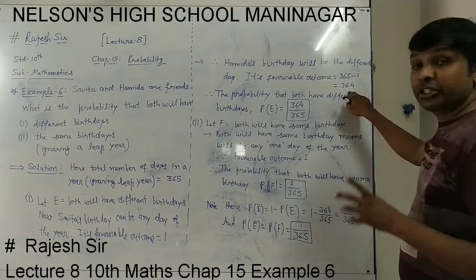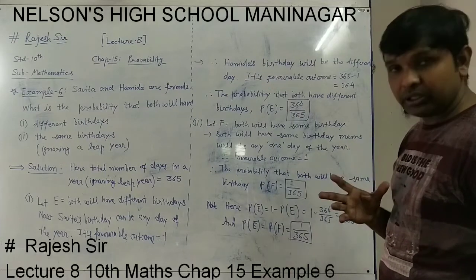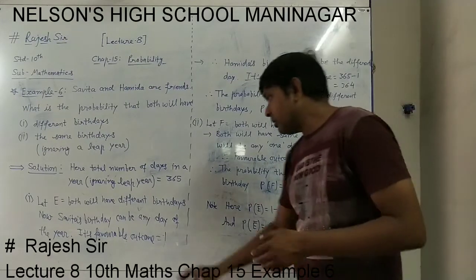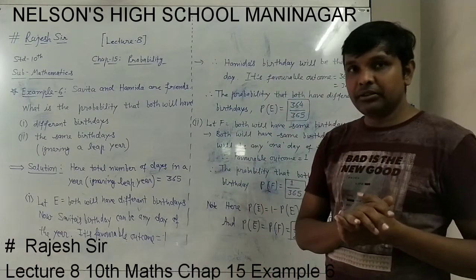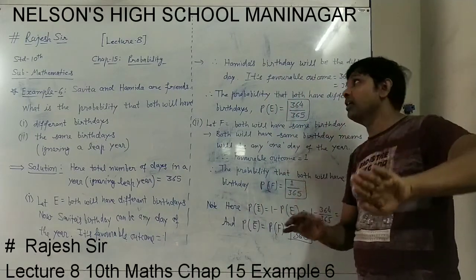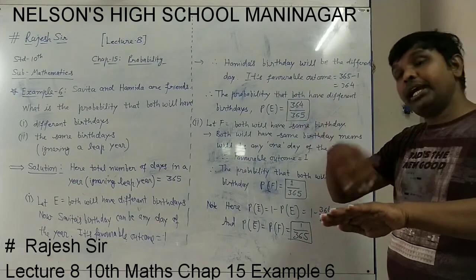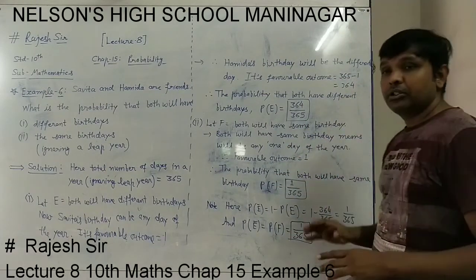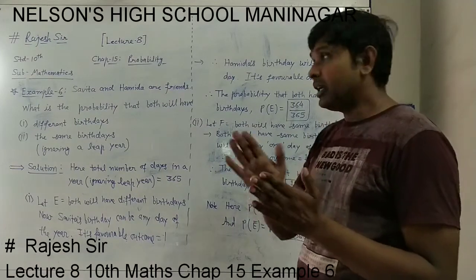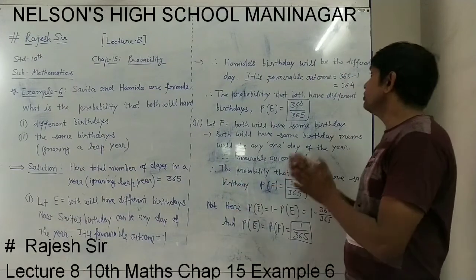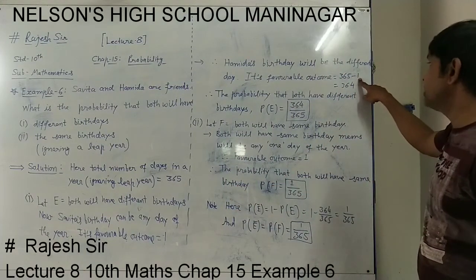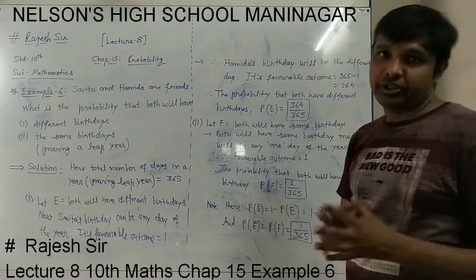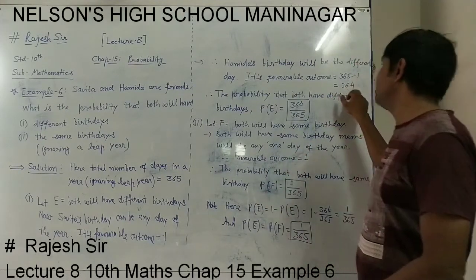So this will be 365 minus 1 = 364. This 364 denotes that Savita's birthday and Hamita's birthday are different. Once again: one day is selected for Savita, and Hamita's birthday will not be on that day — it will be any of 365 minus 1 = 364 days. So the favorable outcome for different birthdays is 364.